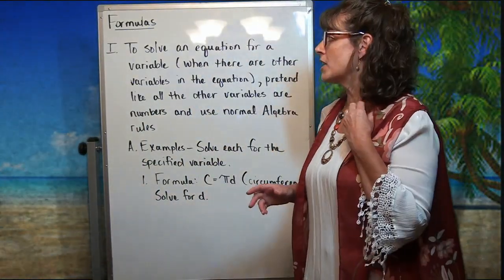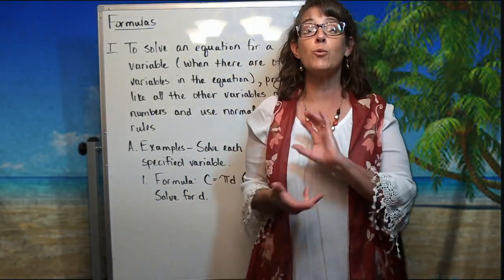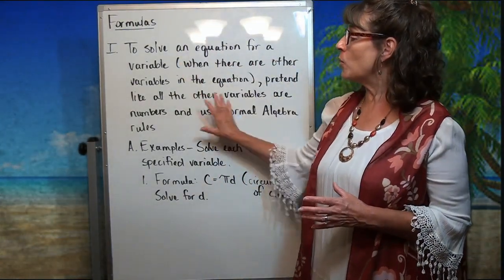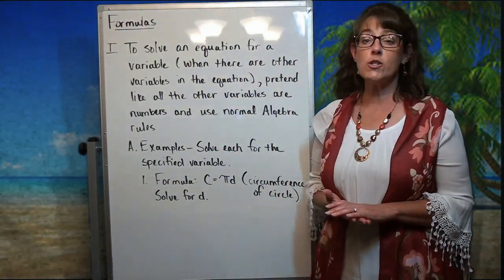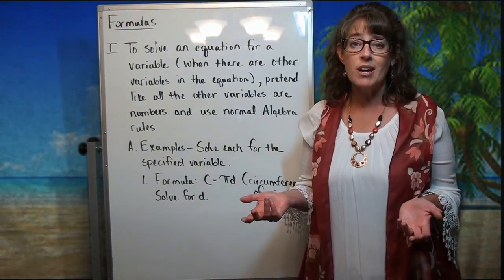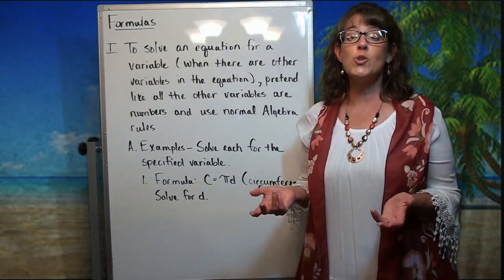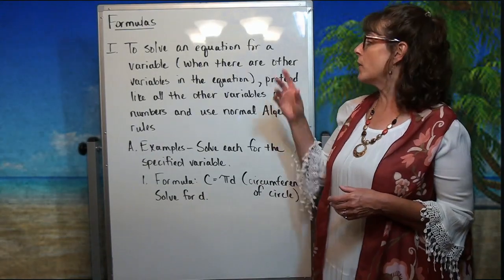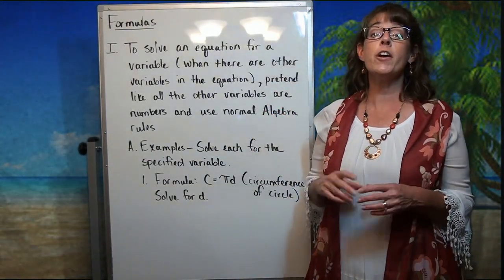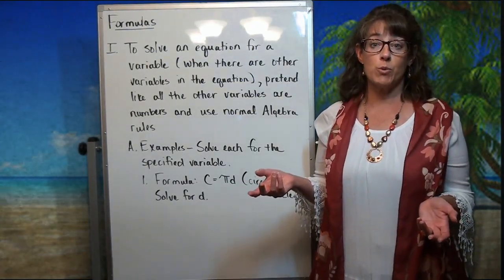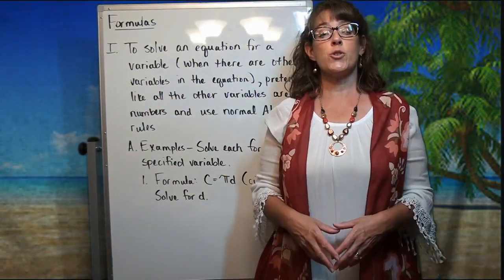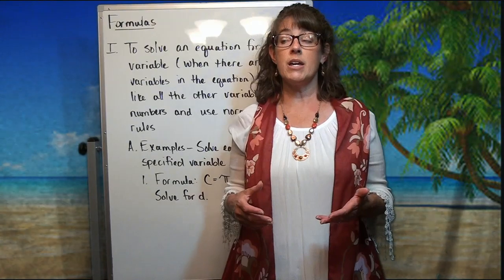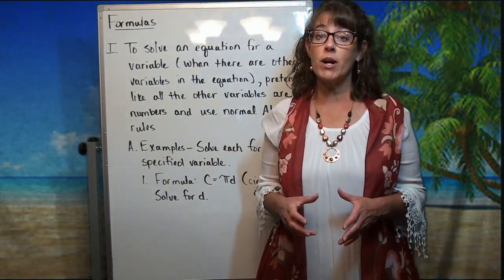Let's get on with our lesson for today, which is all about formulas. What we're going to do is take some formulas and rearrange them. To solve an equation for a variable — because that's actually what a formula is, it's just an equation with more than one variable — you pretend like all the other variables are numbers, then use normal algebra rules. That means we do unto one side as we do unto the other, reversing the order of operations and doing the opposite of what's been done to the variable already.